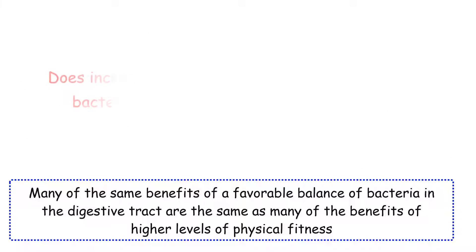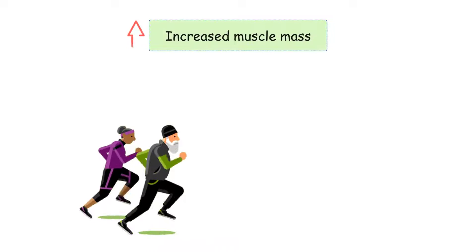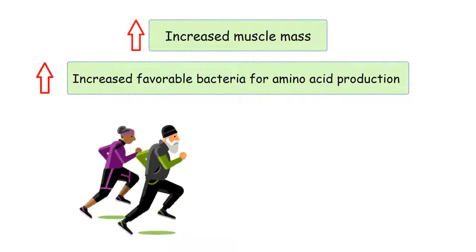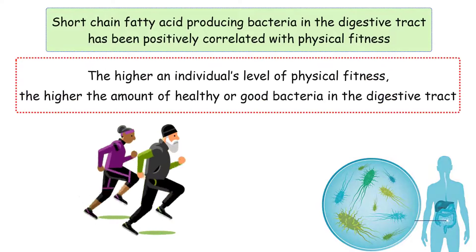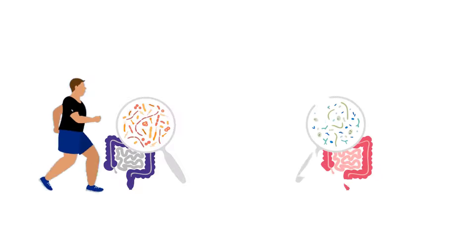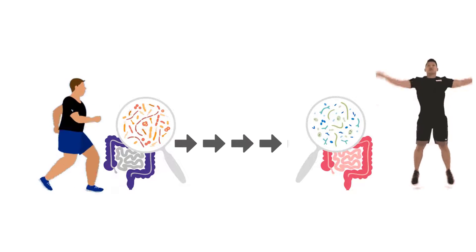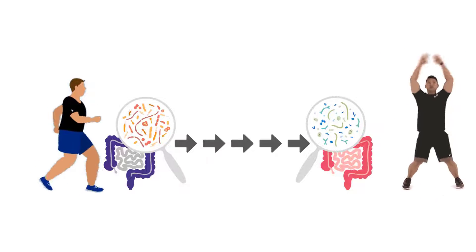This leads to the question: does increased physical fitness affect the type of bacteria that grows in the digestive tract? Some studies have shown this to be true. In one study, elderly participants who completed an exercise program had both increased muscle mass and increased favorable bacteria for amino acid production. Short-chain fatty acid-producing bacteria in the digestive tract has also been positively correlated with physical fitness. Furthermore, overweight participants who completed an exercise training program saw changes to their gut microbiota that matched the gut microbiota of healthier, more fit individuals as they lost fat mass. Thus, altering the gut microbiota may be one of the main ways exercise training provides its health benefits.